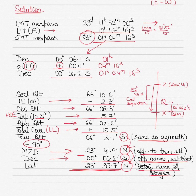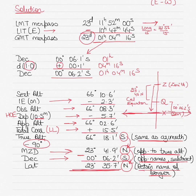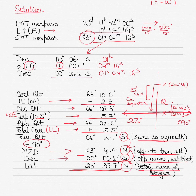The position line is east-west, or 090 to 270 degrees, because the sun is bearing exactly south, and the position line is always drawn perpendicular to the bearing. In meridian passage questions, the body is always bearing either due north or due south of the observer, so the position line drawn perpendicular to that bearing is always 090 to 270 degrees.